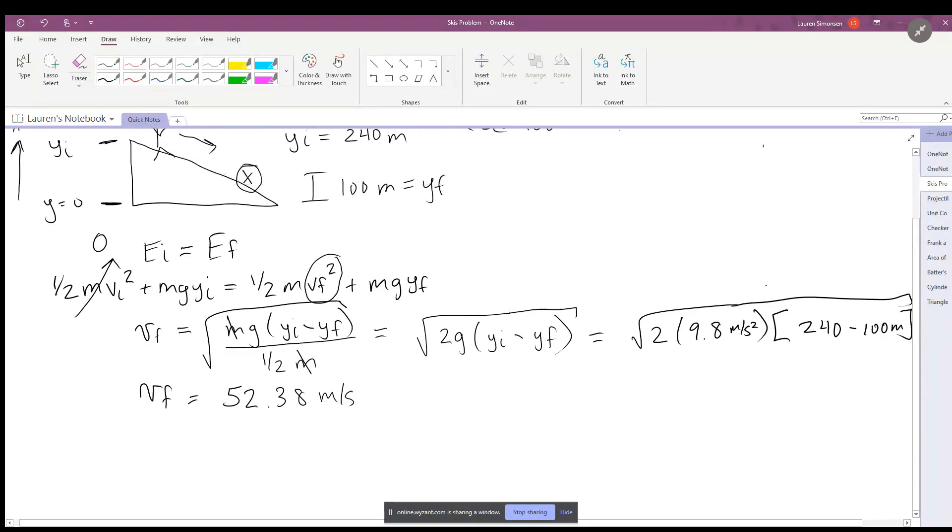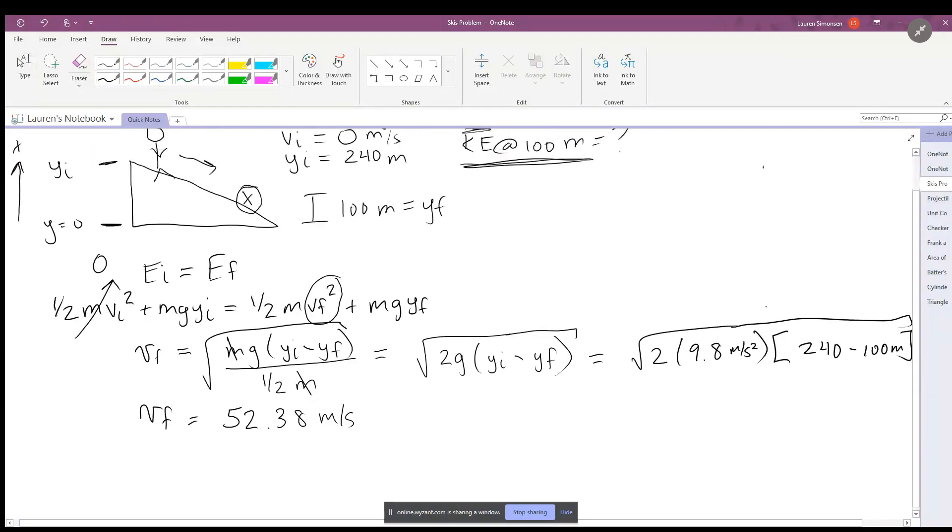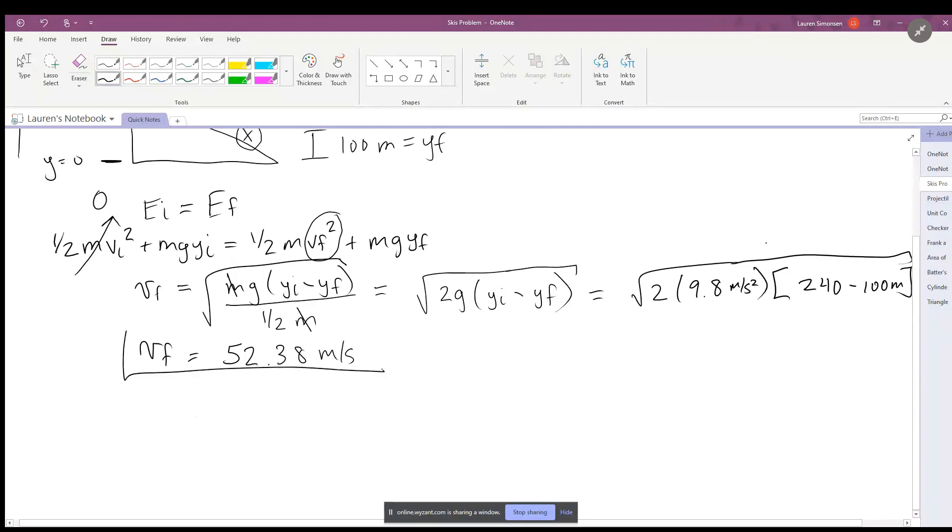So the next part of the question asks for the kinetic energy at that point. Here we have kinetic energy at 100 meters, and the equation for kinetic energy, if you remember, is one half m v final at 100 meters squared.